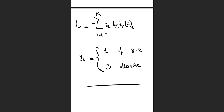The cross-entropy loss for K-class classification has the form: summation over k of y_k times log(f_theta(x)_k). The logic is the same as in the binary case. Here y_k equals 1 if the true class is k and 0 otherwise, so the loss reduces to the negative log of the probability assigned to the true class. The larger that probability, the closer its log is to zero, and the smaller the loss.